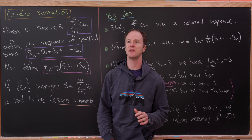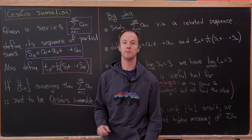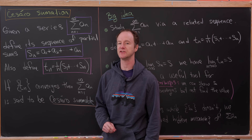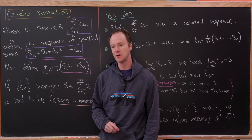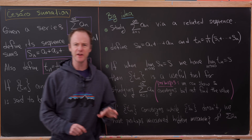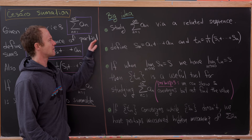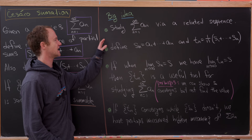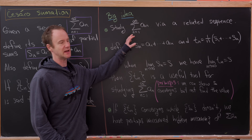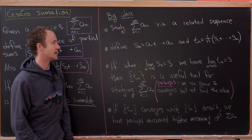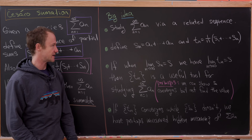Today we're going to look at a certain method for finding sums of divergent series known as Cesàro summation. Let's look at the big idea first. Our main goal here is to study a series — written as the series A sub n — via some related sequence.